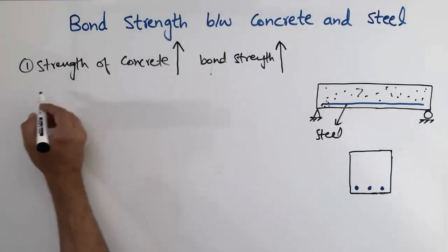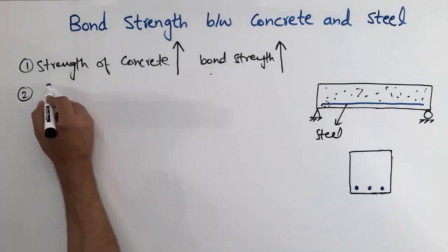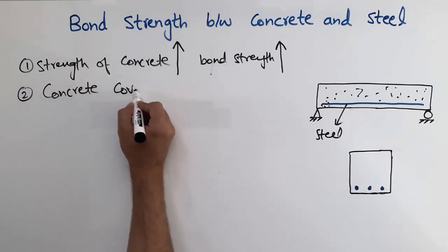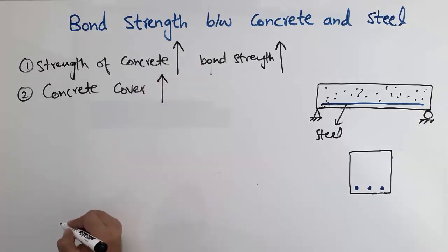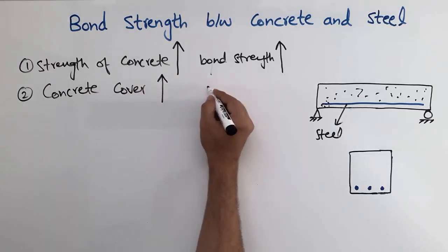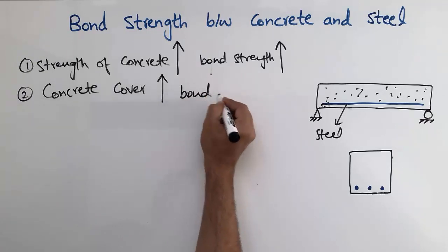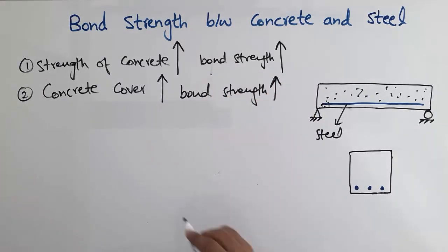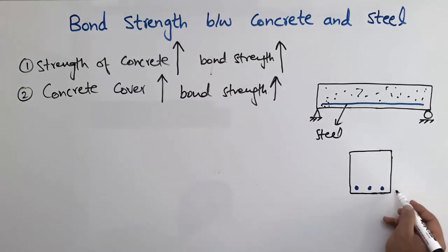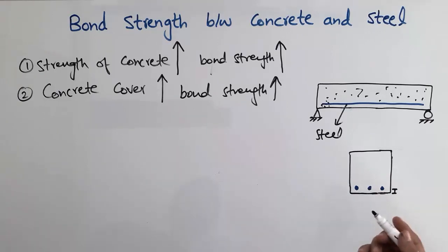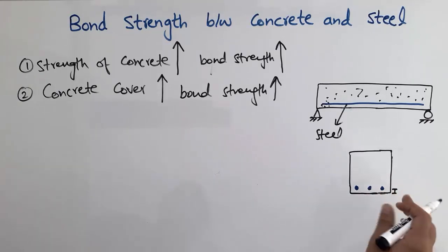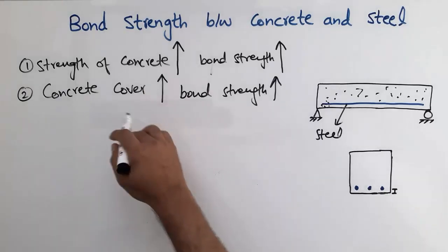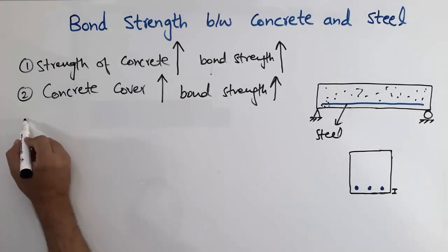The second factor is the concrete cover. If you have a larger concrete cover, then our bond strength is also going to be higher. The concrete cover which we provide normally may be two inches or three inches, depending upon your structure member. So if you have a higher concrete cover, we have good bond strength between these two different materials.